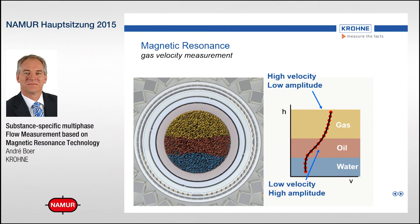At the top part of the pipe, you will typically see high velocity measurements and low amplitude, indicating gas is present there. In the midsection you will see higher amplitudes and lower velocities, and even lower in the pipe you'll see further lower velocities and similar amplitudes. By doing this imaging and slicing, we can find out how much gas was in the cross-section, at what velocity the gas was flowing, and we can do the same for oil and water.